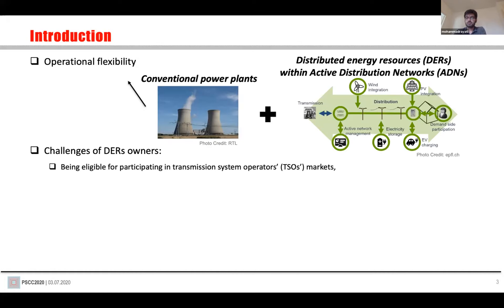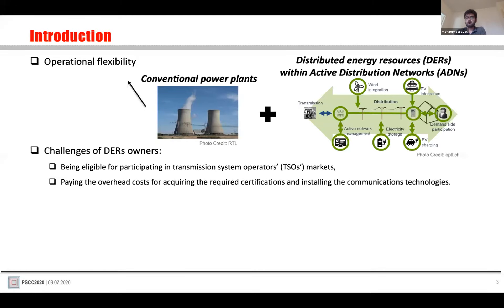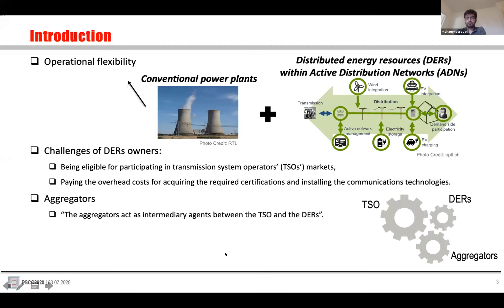But for using the capacity of DERs, there are many challenges. First, most of the time they are not eligible for participating in the transmission market because of their sizes. Second, they don't have incentive to pay the overhead costs, such as acquiring certification or installing communication technologies. To solve this issue, a new player named aggregator in the distribution network facilitates the interaction of the DERs and TSOs for participating in the transmission market. The aggregator acts as an intermediary agent between the TSOs and the DERs.